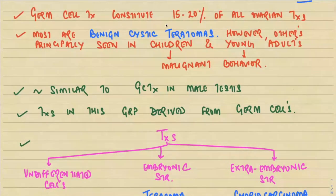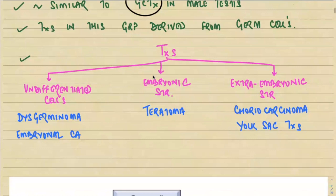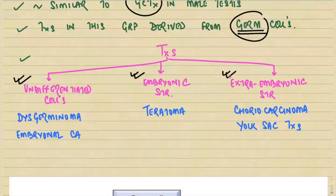Germ cell tumors constitute 15 to 20 percent of all ovarian tumors, and most of them are benign cystic teratomas. Others, principally seen in children and young adults, can have malignant behavior. These tumors are similar to germ cell tumors in the male testes and are derived from the germ cells. Tumors arising from undifferentiated cells include dysgerminoma and embryonal carcinoma; those from embryonic structures include teratoma; and those from extra-embryonic structures include choriocarcinoma and yolk sac tumors.